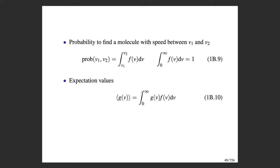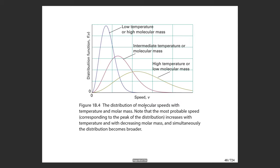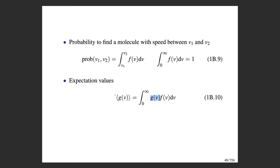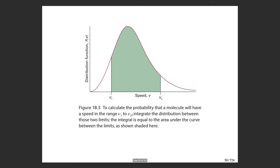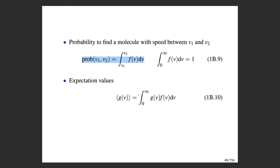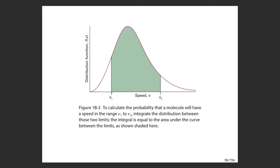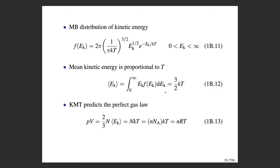We can take statistical averages using the distribution of speeds. This integral represents the probability of finding a molecule with speed between V1 and V2 — you integrate the distribution between those two values. If V1 goes to 0 and V2 to infinity, you're asking the probability of finding a molecule with any speed, which equals 1 — the Maxwell-Boltzmann distribution of speeds is normalized to unity. The area under the curve between V1 and V2 represents that probability.